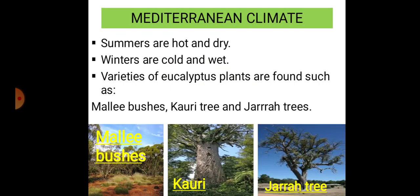The Mediterranean climate found in Australia features hot and dry summers, while winters are cold and wet because of winter rainfall. Varieties of eucalyptus plants are found in this region as well, namely the Mallee bushes, the quarry tree, and the jarrah tree.